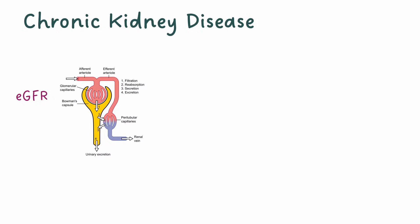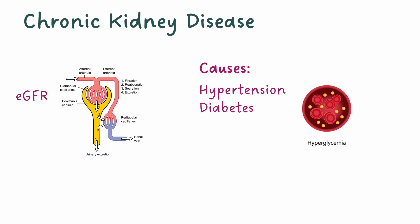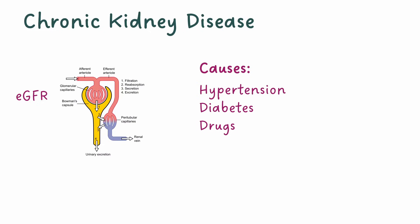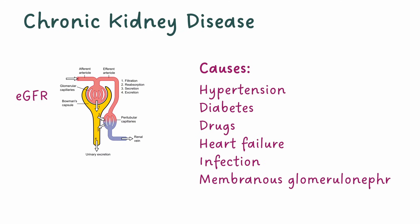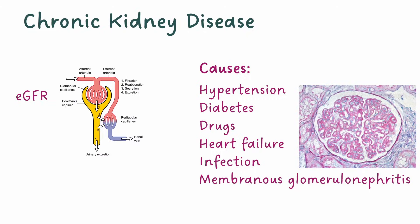There are many causes of CKD, but here are some common ones. Hypertension can damage the kidneys over time, as can having high blood sugar, nephrotoxic medications, heart failure, infections of the urinary system, and membranous glomerulonephritis, where the basement membrane of the glomerulus becomes damaged over time.